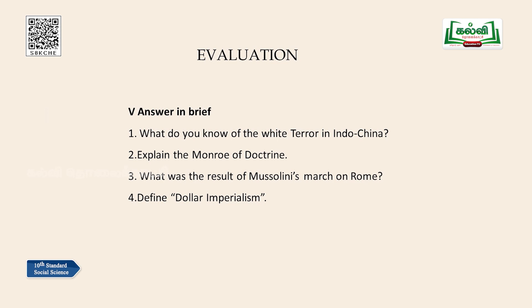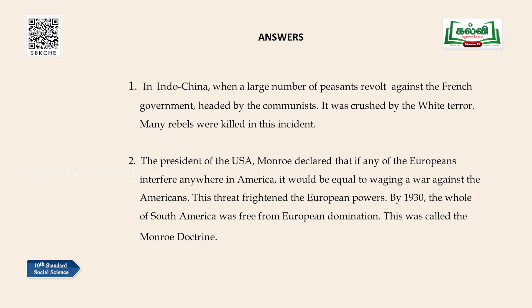Evaluation session — four questions for students: First, what do you know of the white terror in Indochina? Second, explain the Monroe Doctrine. Third, what was the result of Mussolini's march on Rome? Fourth, define dollar imperialism. Answer to Question 1: In Indochina, when a large number of peasants revolted against the French government, headed by the communists, it was crushed by the white terror and many rebels were killed.